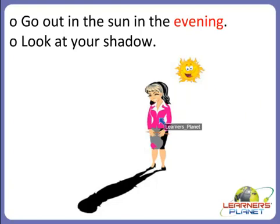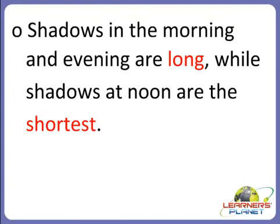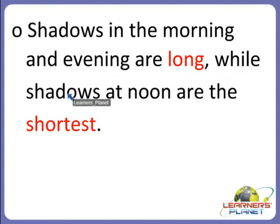When this girl goes out in the sun in the evening, after four o'clock, the shadow is long. So what you noticed, children, is that shadows in the morning and in the evening are long, while the shadows at noon are the shortest.